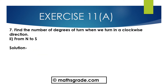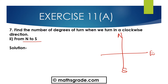North to South is 180 degrees. So the number of degrees of turn when we move in a clockwise direction from North to South — this is North, this is South, East, West. From North to South, this is 90 and then another 90. So North to South is 180 degrees. The answer is 180 degrees.